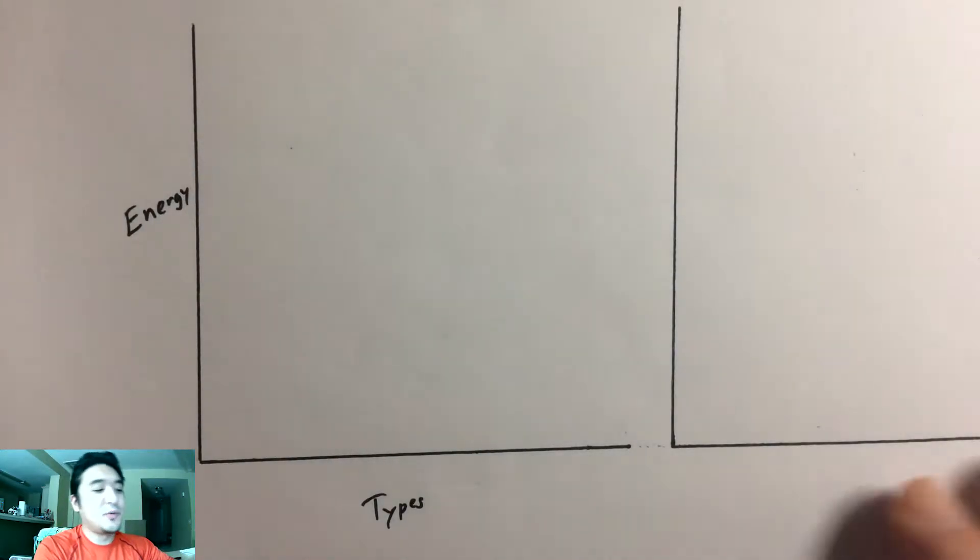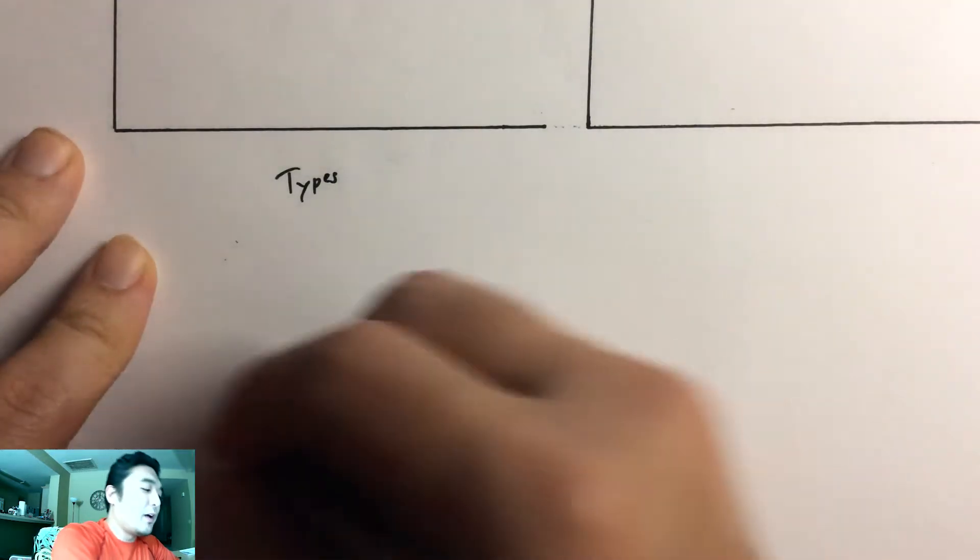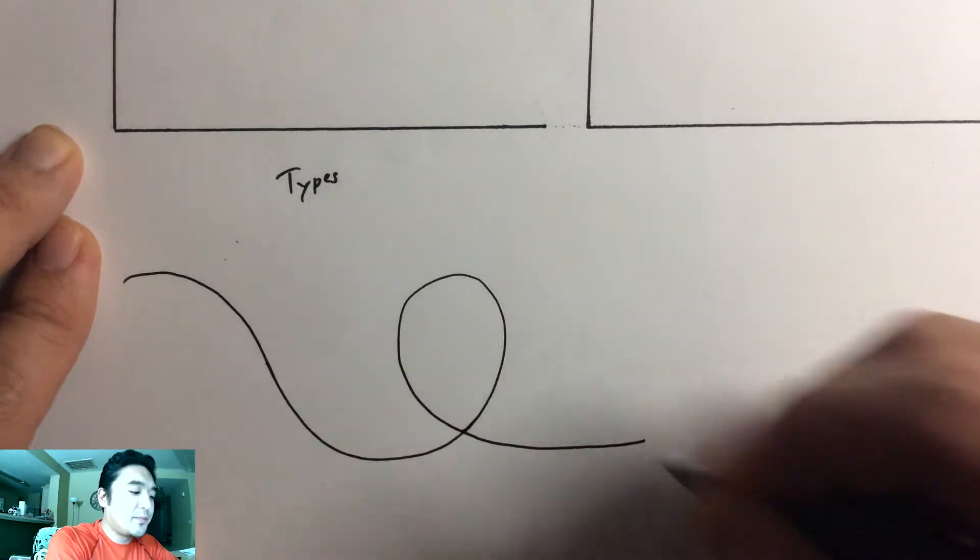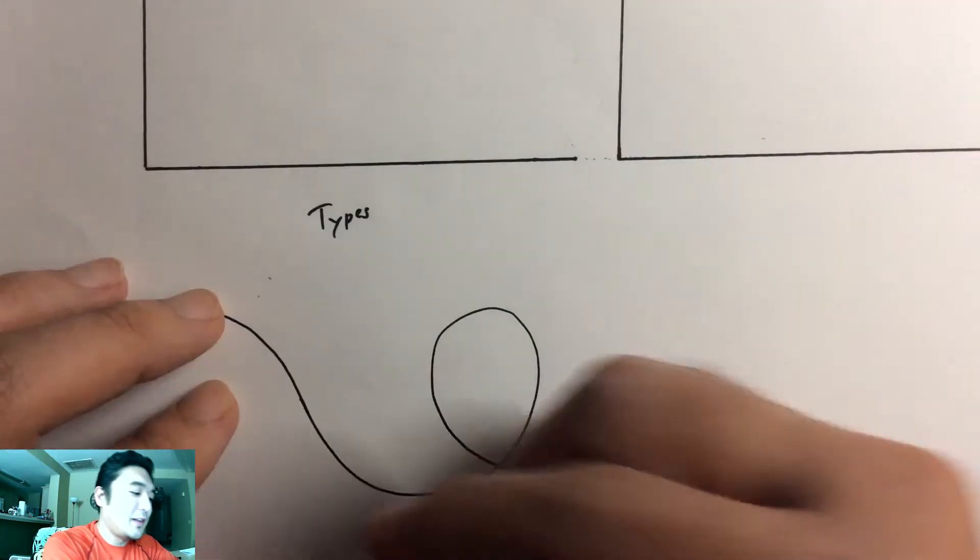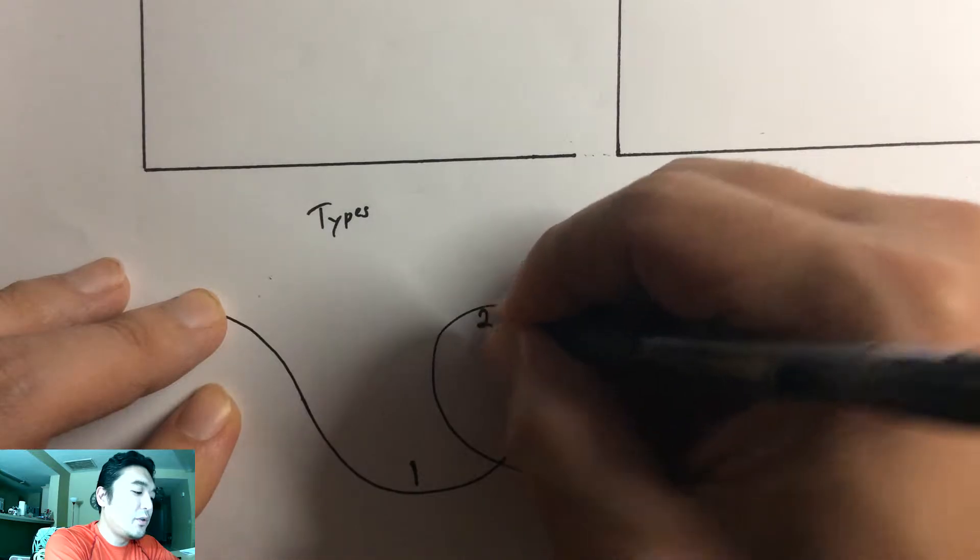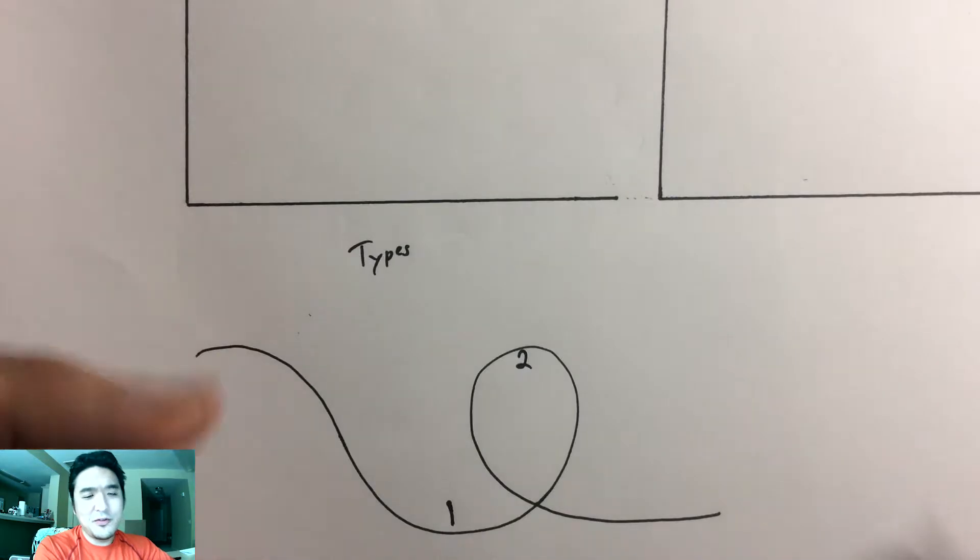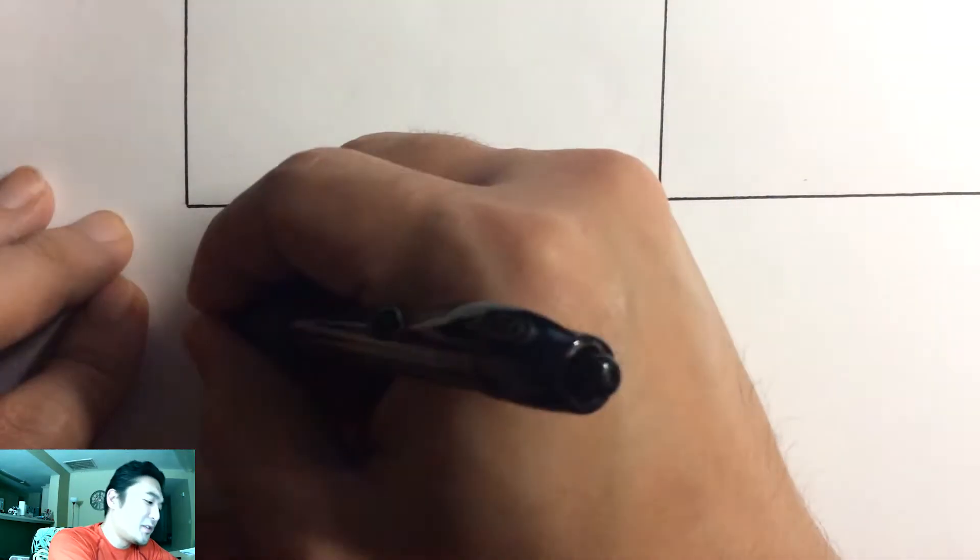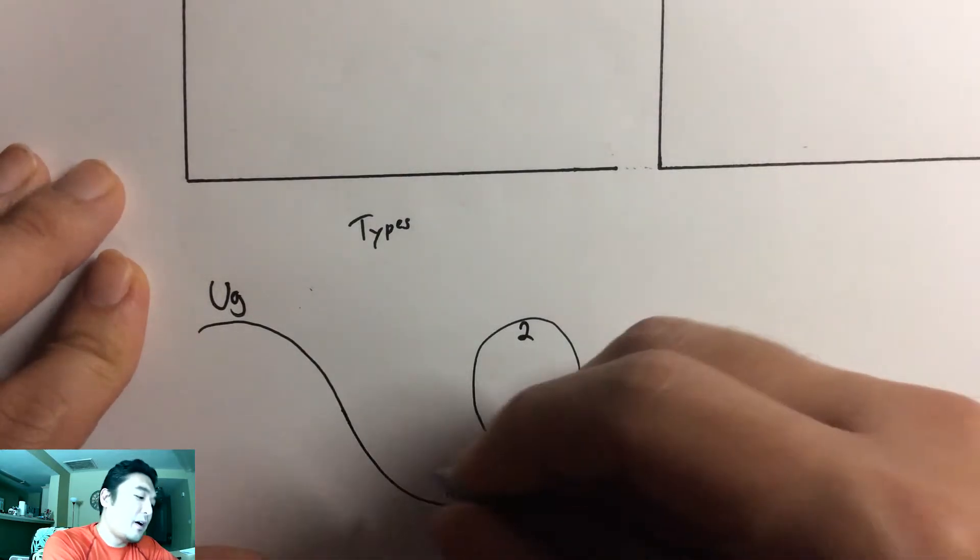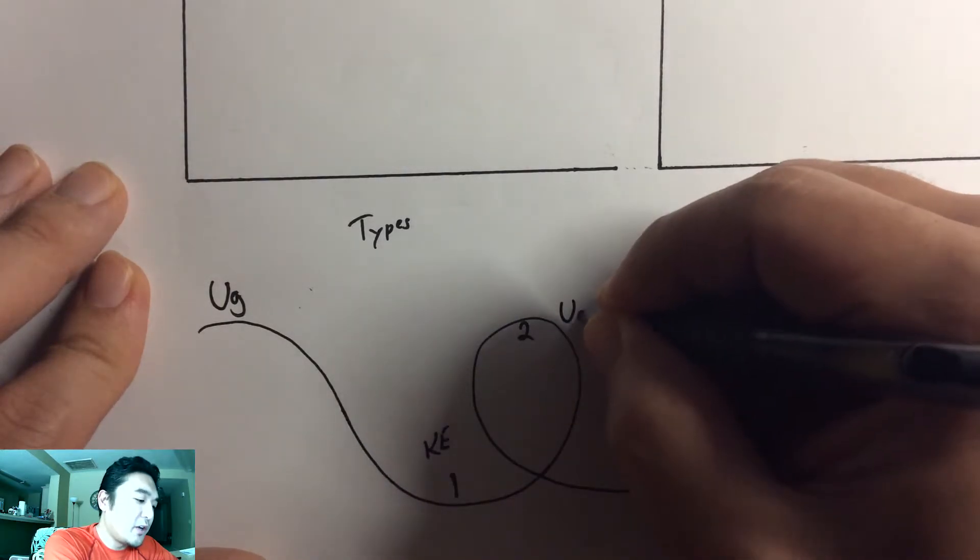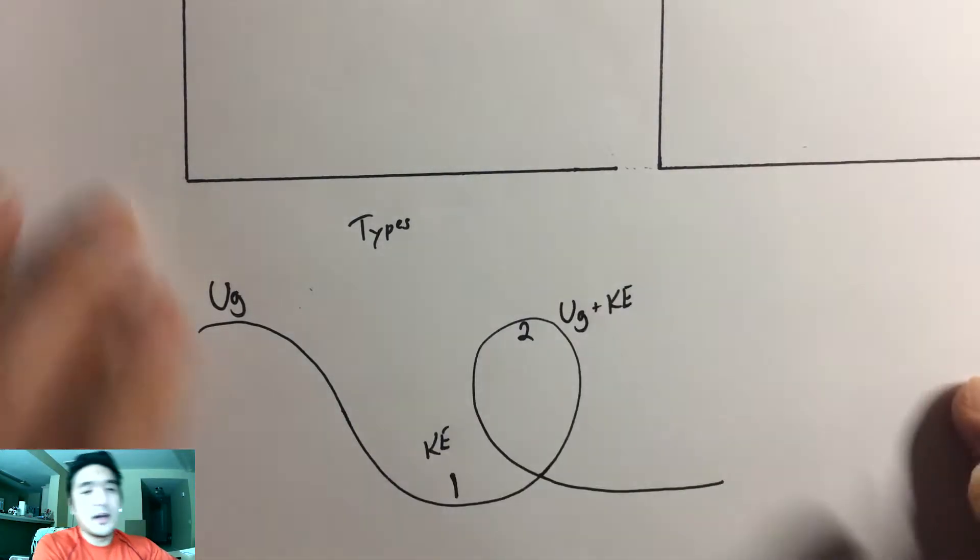Here, down here is going to be the types. And of course, we would pick a certain situation. So if we said that we have this initial hill, we came around, we go around like this. If we pick a certain point, let's say like right here, let's call this point one. And then let's call this point two up at the top of this loop-to-loop. What we would say at point one was that all of our energy from the beginning was potential energy due to gravity. Down at the bottom, we would say that it's kinetic energy down here. Up here, we would say that it's both potential energy due to gravity and kinetic energy.